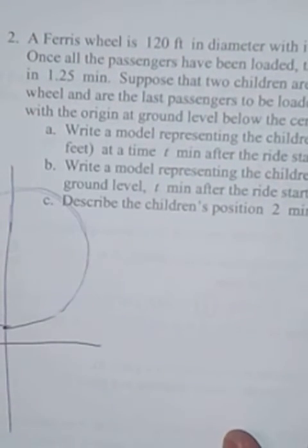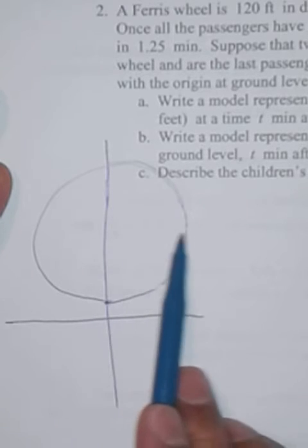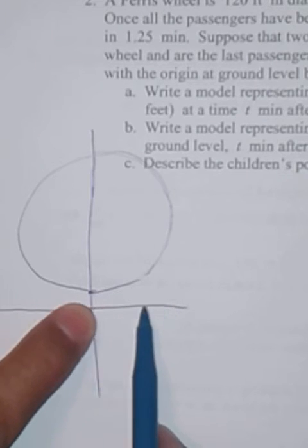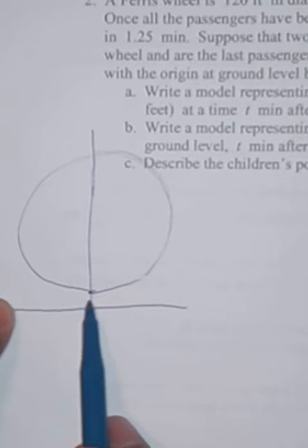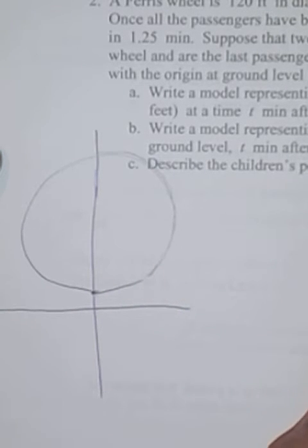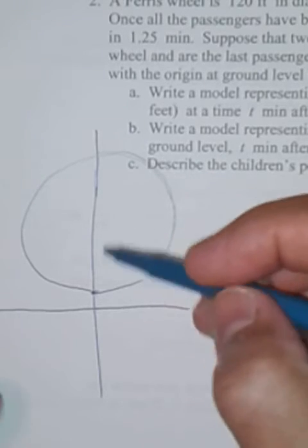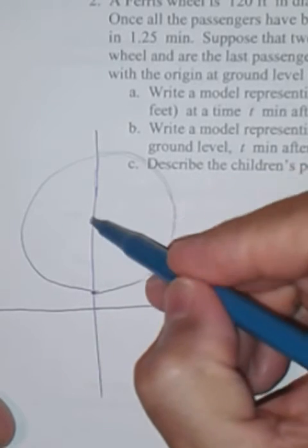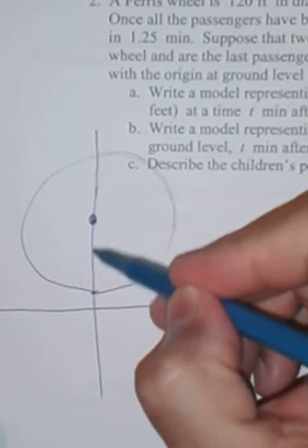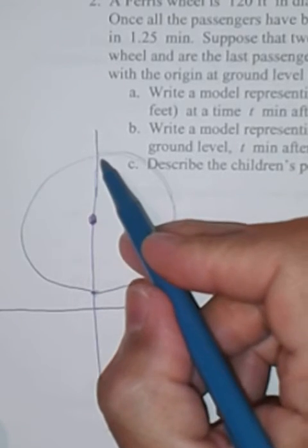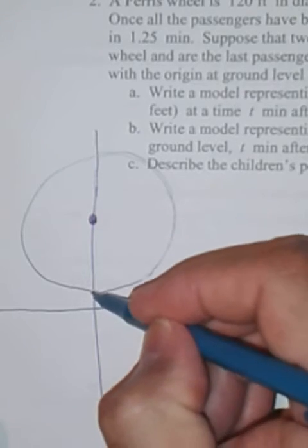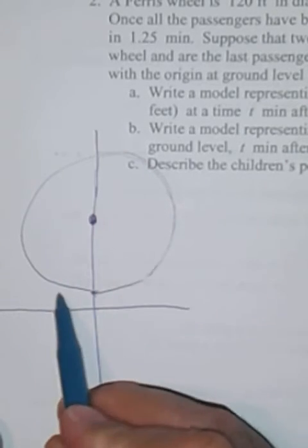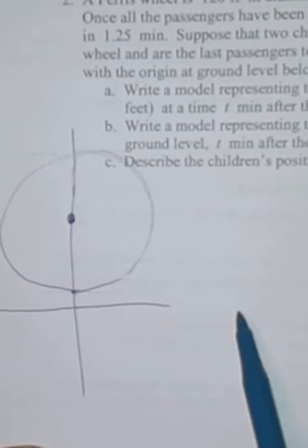And then I want to have, letter A says write a model represents children's horizontal position. So I want a model that represents the horizontal position. Notice the horizontal is going to be from zero to the right positive, to the left negative, to the right positive, to the left negative. And then letter B write a model representing children's height, Y in feet above ground level. So above ground level is going to be this way. But if you pick a center point, the center of the wheel, then you can measure the height between the three and what's the highest point? It's 120 diameter. So it's three and 123 is the tallest point. From three to 123 would be 120 feet.